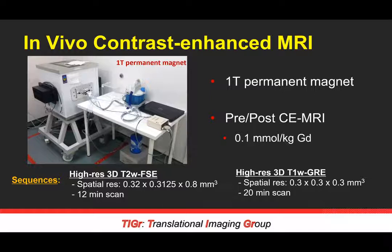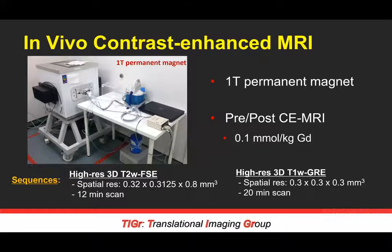We are using the 1 Tesla permanent magnet — the Aspect M2 — along with the Aspect M7 for higher resolution imaging. We use a 3D T2-weighted FSE sequence for standard anatomical imaging and a high-resolution 3D T1-weighted gradient recall echo sequence with 300 micron isotropic resolution. A big challenge in fetal imaging is that we can't just gate for maternal respiratory and cardiac motion — fetal motion must also be addressed by acquiring multiple averages and discarding those with excessive motion artifact. Our scan time encompasses five external averages for the gradient recall echo protocol.